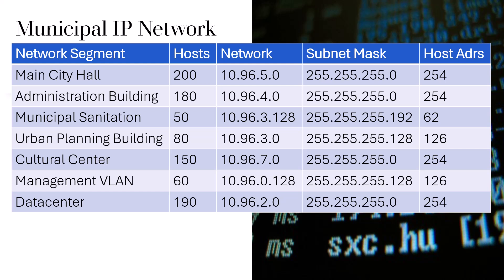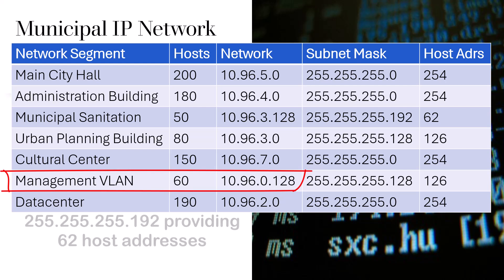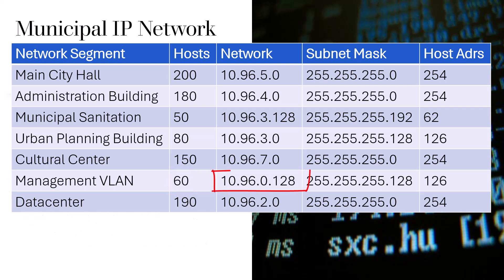For example, here we see that the management VLAN could have used the smaller subnet mask of 255.255.255.192, but that would be much too restrictive because we only have room for two additional hosts. So we made sure that we would use the next largest subnet size, which gives us 126 hosts to accommodate this growth.